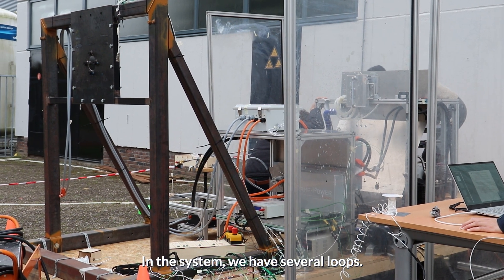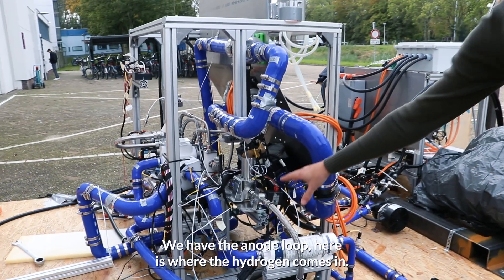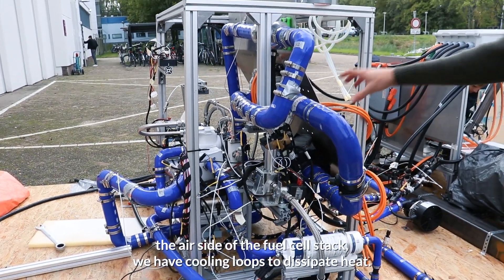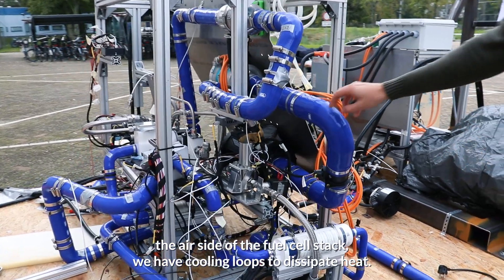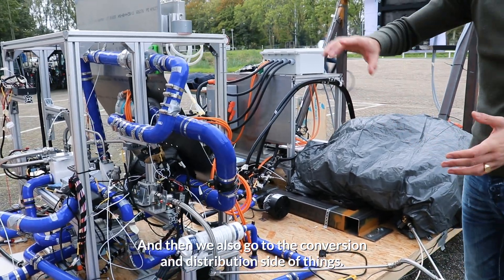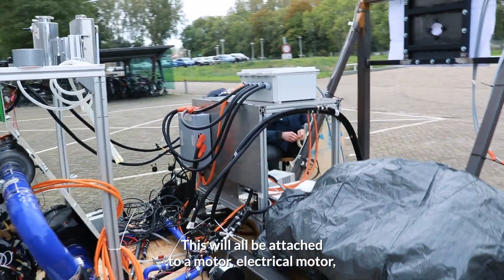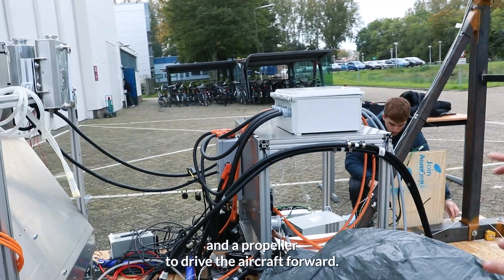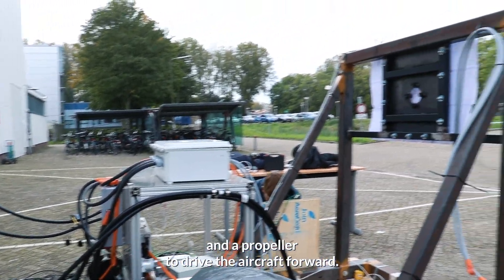In the system we have several loops. We have the anode loop, where the hydrogen comes in, and the cathode loop, the air side of the fuel cell stack. We have cooling loops to dissipate the heat, and then we also go to the conversion and distribution side of things. This will all be attached to an electrical motor and a propeller to drive the aircraft forward.